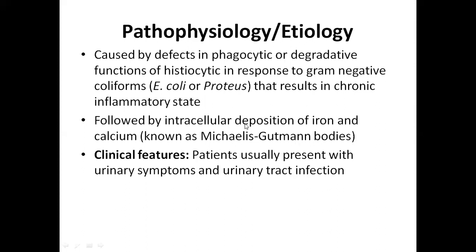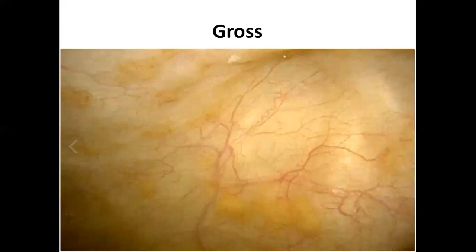In terms of clinical features, this lesion commonly occurs with recurrent infection. When there is an infection in the urinary bladder, the patient presents with common symptoms of urinary tract infection. When we look at this lesion grossly, it appears as yellowish, soft, plaque-like lesions which can grossly mimic carcinoma as well.